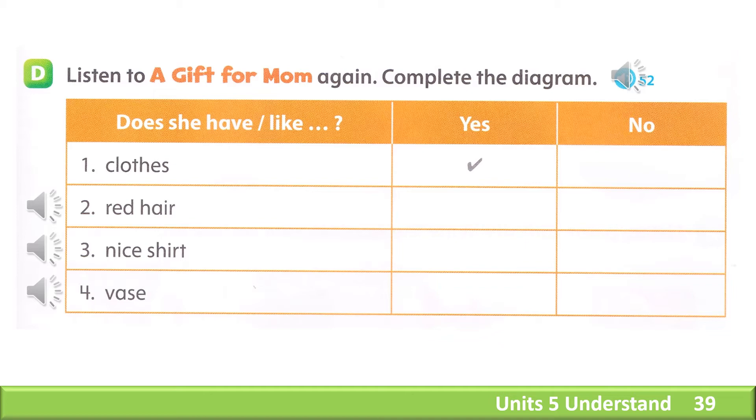Mom likes clothes. Look at her picture on my smartphone. She has red hair like me. Mom doesn't like T-shirts. She has nice shirts.